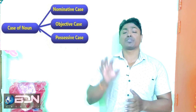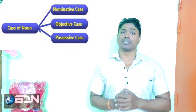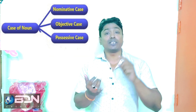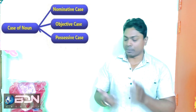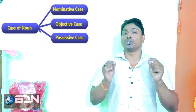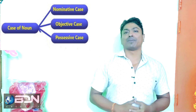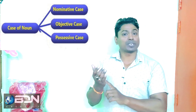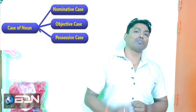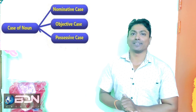Basically there are three kinds of cases in English. Number one is called subjective case, and it is also called nominative case. Then there is objective case, and then possessive case. So: subjective or nominative, objective, and possessive case.